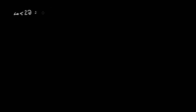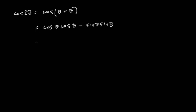The next thing I want to look at is cosine 2 theta. Let's not reinvent the wheel here — we'll look at a geometric proof later. Let's approach this the exact same way: cosine of theta plus theta. That's cosine cosine minus sine sine. And there is a formula for cosine 2 theta: cosine squared theta minus sine squared theta.